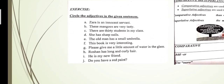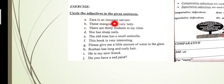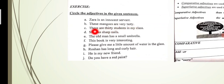This is your exercise: circle the adjectives in the given sentences. Sentence one: 'Zara is an innocent servant.' The noun is servant, and how is she? Innocent — so 'innocent' is the adjective. Sentence two: 'These mangoes are very tasty.' The noun is mangoes, and 'tasty' is the adjective.